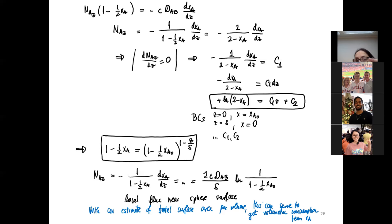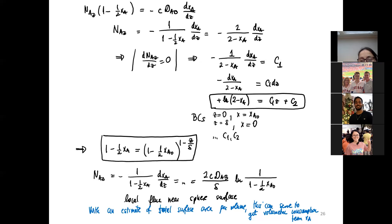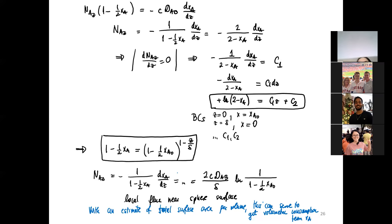So again, we were solving this near every surface, ignoring curvature of the surface, assuming there is a film around every surface where these assumptions apply. And that changed our overall solution slightly — this is slightly different from the solution for the stagnant film.